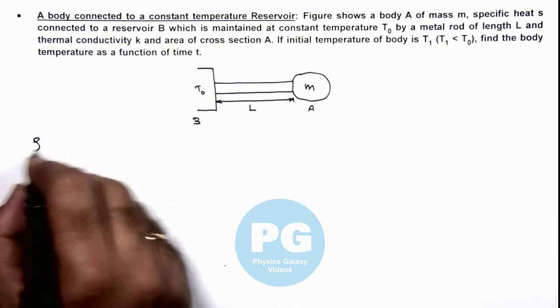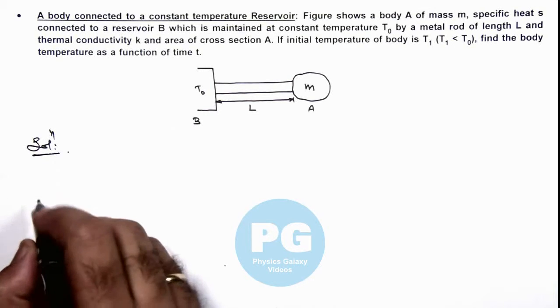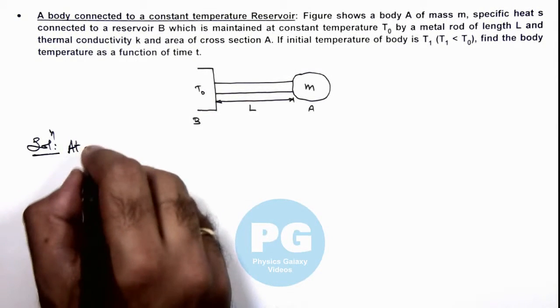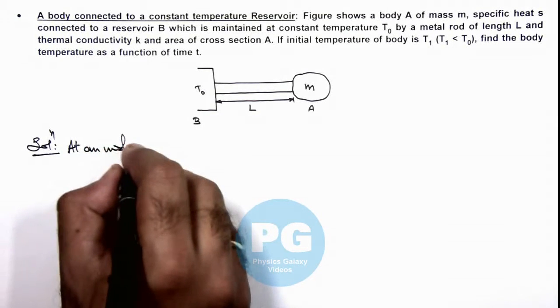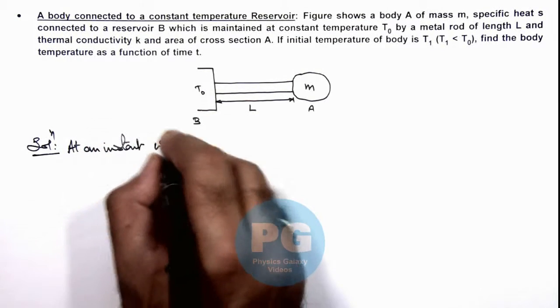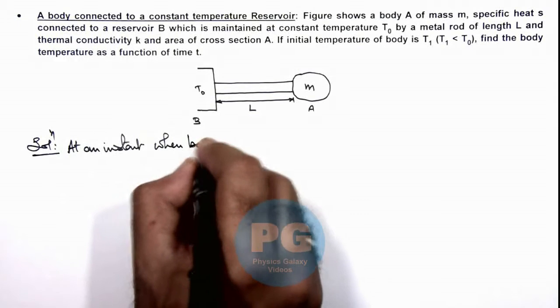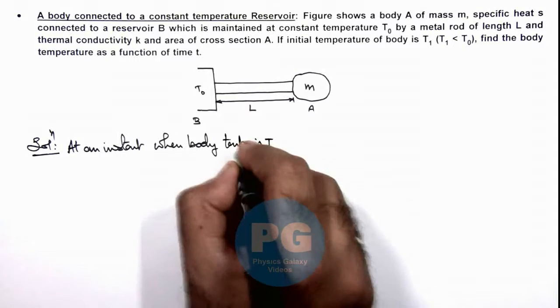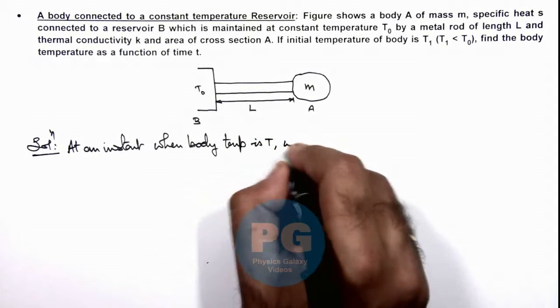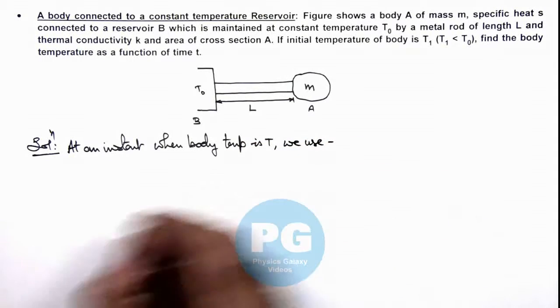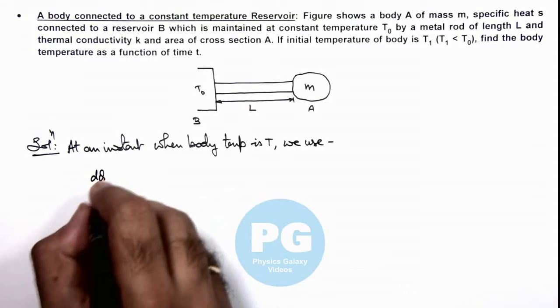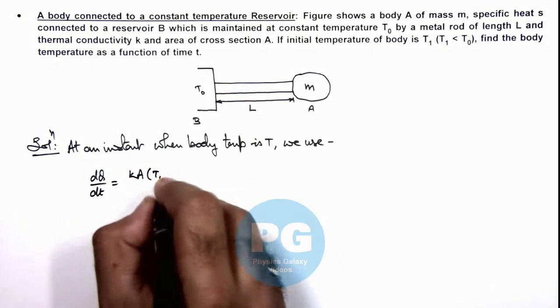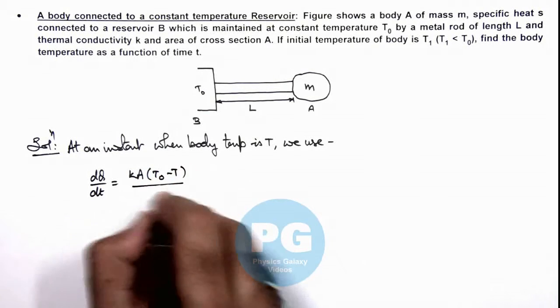Now in this illustration, at an intermediate instant when body temperature is T, we use the rate of flow of heat dQ/dt can be written as kA(T₀ - T) divided by L.